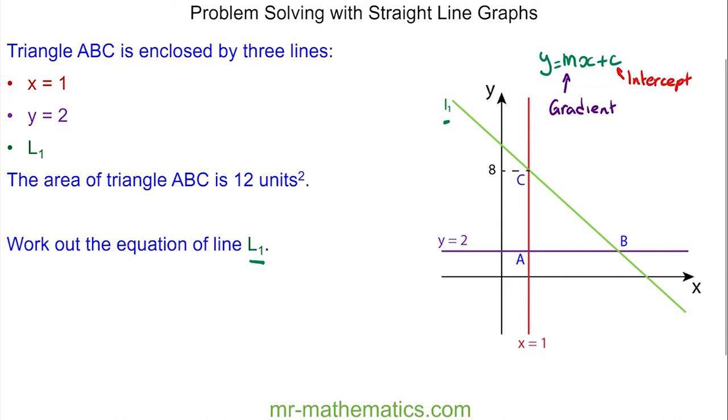So we're going to begin by working out the gradient of the straight line. To do this we need to work out the coordinates at B. We know that at A we have the coordinates (1, 2), because it lies along the line x equals 1 and y equals 2.